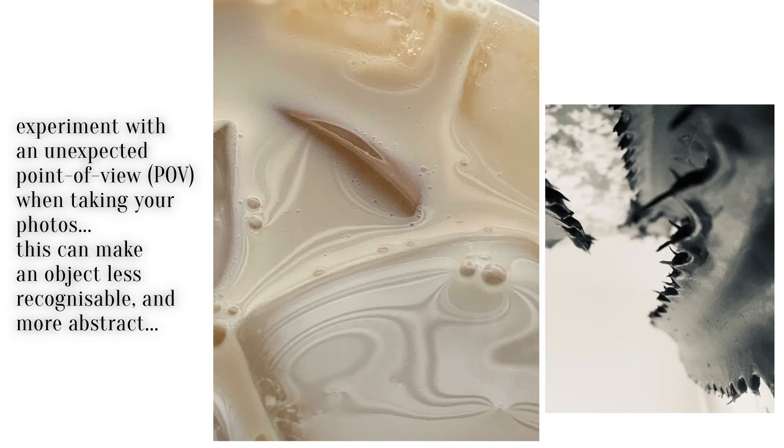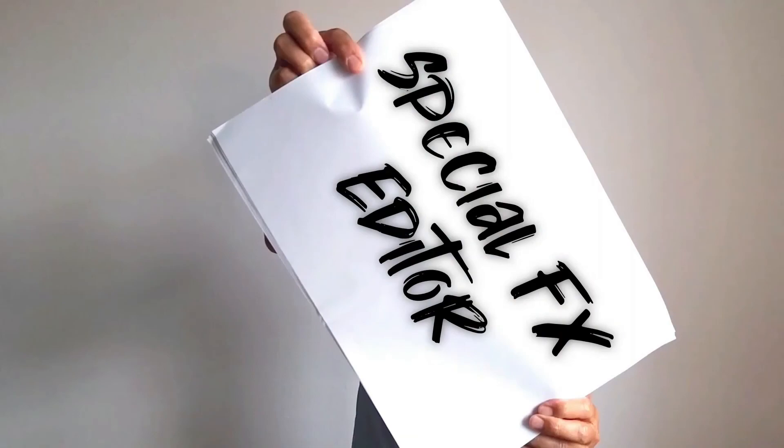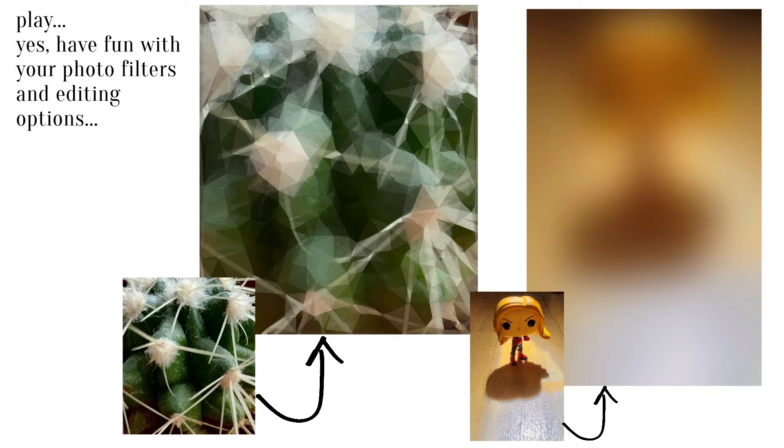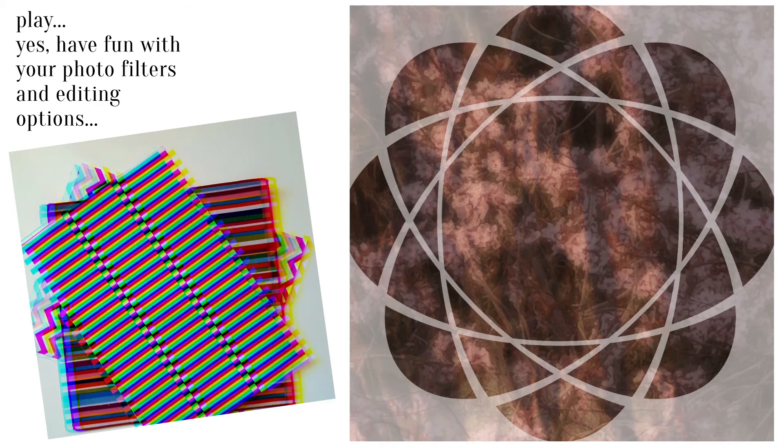Experiment with unexpected points of view when taking your photos. This can make an object less recognisable and more abstract. What else can you discover by playing with your photo filters and editing options? Look at the abstract compositions my students made by simply experimenting and playing around with their filters and editing functions.